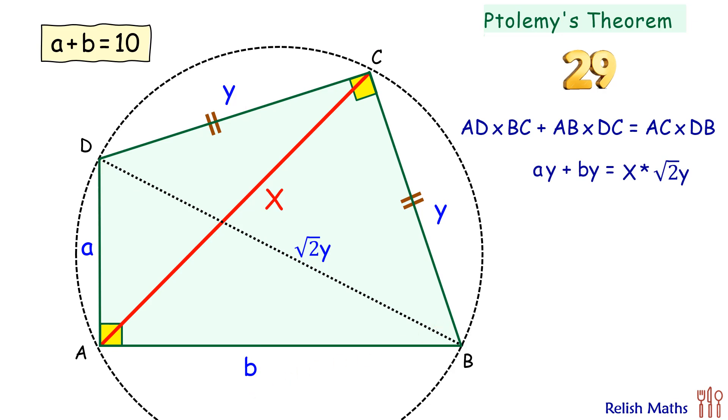In this equation, both sides y will get cancelled out, so we are left with a plus b equals root 2x. Putting the value of a plus b as 10 centimeters, we get 10 equals root 2x, or the value of x is 5 root 2 centimeters.